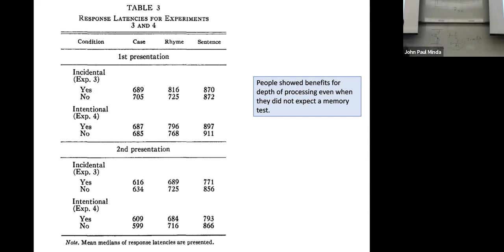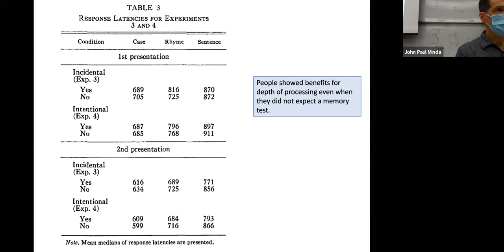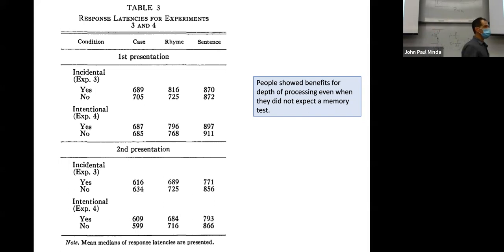I want to summarize this and forecast something briefly. In the online lecture — which I also recorded today — you'll see examples of many memory errors that come about because of exactly the same finding. The same things that let you encode, rehearse, and recall information without trying — this levels of processing effect — can also result in memory errors. If you can learn things without trying, you can also recall things that you didn't actually learn, because of this elaborative encoding process.